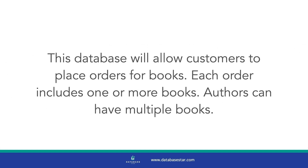For example, let's say you're building a database for an online bookstore. You might write: 'This database will allow customers to place orders for books. Each order includes one or more books. Authors can have multiple books.' This allows you to get a good idea of what your database is about. Now you can look for the nouns in that description — in this example, they could be customers, orders, books, and authors. These are likely the tables you can start with.